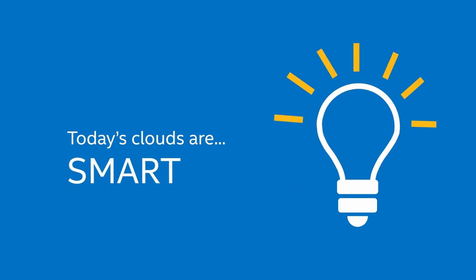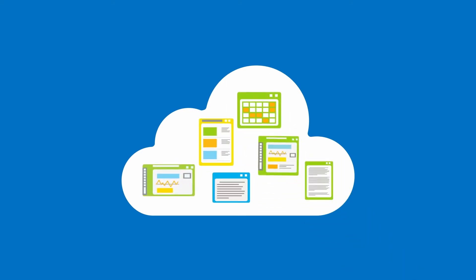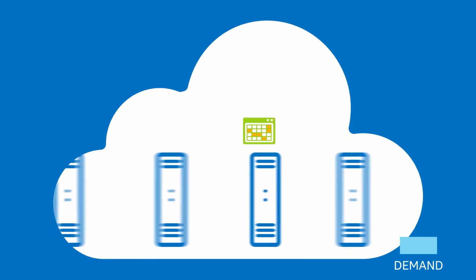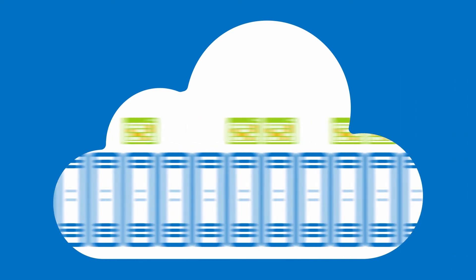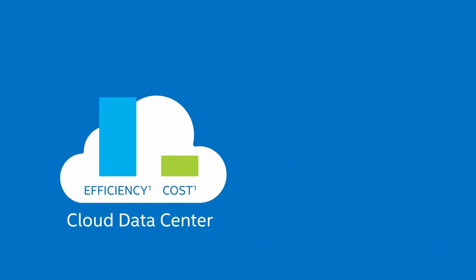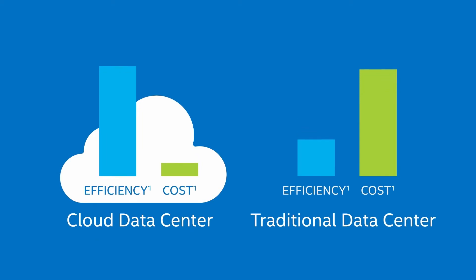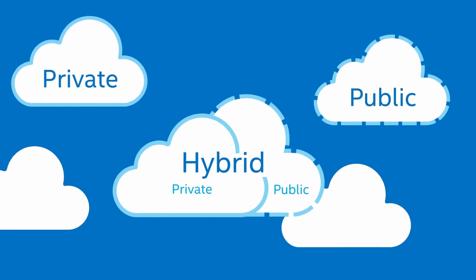That's why clouds are awesome. Today's clouds are smart, automated, and adaptive. Apps can be deployed far more quickly without custom provisioning boxes. And once deployed, those apps can dynamically scale on demand. Resource issues like congestion or failure can be resolved automatically. Quite simply, clouds can be more efficient and cost-effective than traditional data centers.